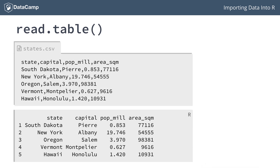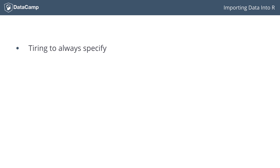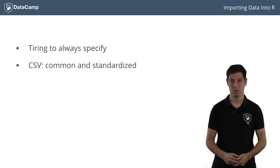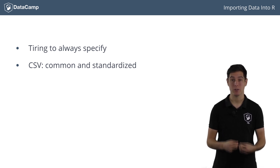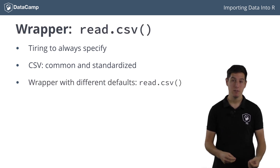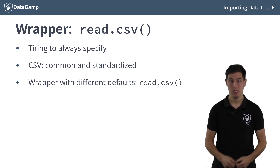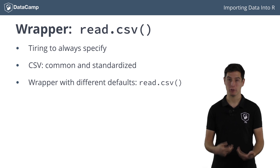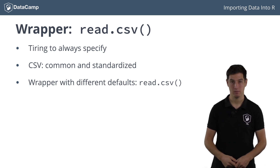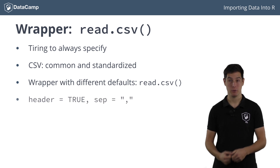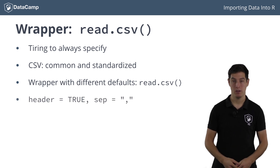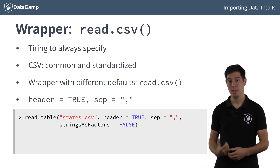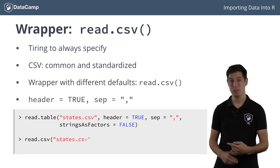The read.table function works fine, but it's pretty tiring to specify all these arguments every time. CSV files are a common and standardized type of flat file, which is why the utils package also provides the read.csv function. This function is a wrapper around read.table, meaning it calls read.table behind the scenes but with different default arguments to match the CSV format. Specifically, the default for header is TRUE and for sep is a comma, so you don't have to manually specify these anymore. This means that the read.table call from before is exactly the same as a read.csv call.